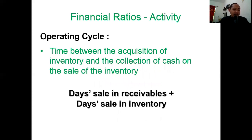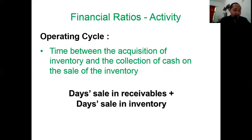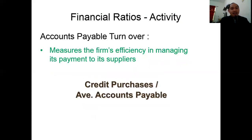The operating cycle is the time between the acquisition of inventory and the collection of cash on the sale of that inventory. The formula is: days sales in receivables plus days sales in inventory. A shorter operating cycle is better — always remember it measures how quickly you have collected your cash after the inventory is sold.